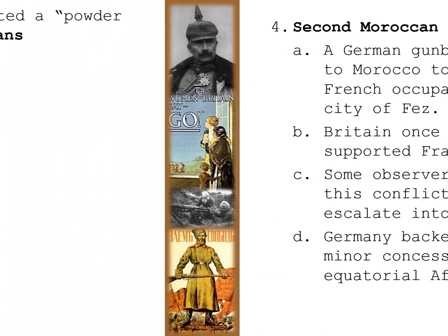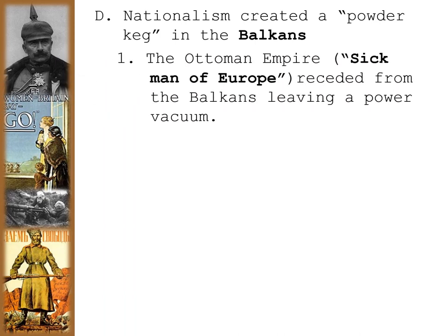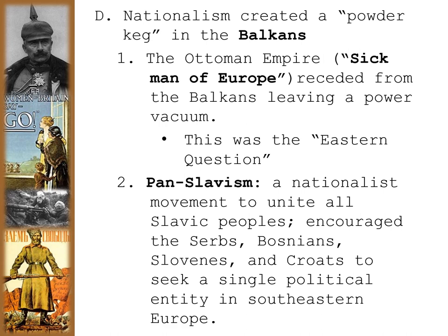Nationalism created a powder keg in the Balkans — another long-term cause of the war. The Ottoman Empire, the sick man of Europe, had receded from the Balkans, leaving a power vacuum. The Eastern Question asked: who would fill that vacuum? Pan-Slavism was a nationalist movement to unite all Slavic people — encouraging Serbs, Bosnians, Slovenes, and Croats to seek a single political entity in southeastern Europe. Pan-Slavism was supported by Russia, who saw interests in the region, and Russia focused on Balkan territories after its humiliating loss in the Russo-Japanese War.